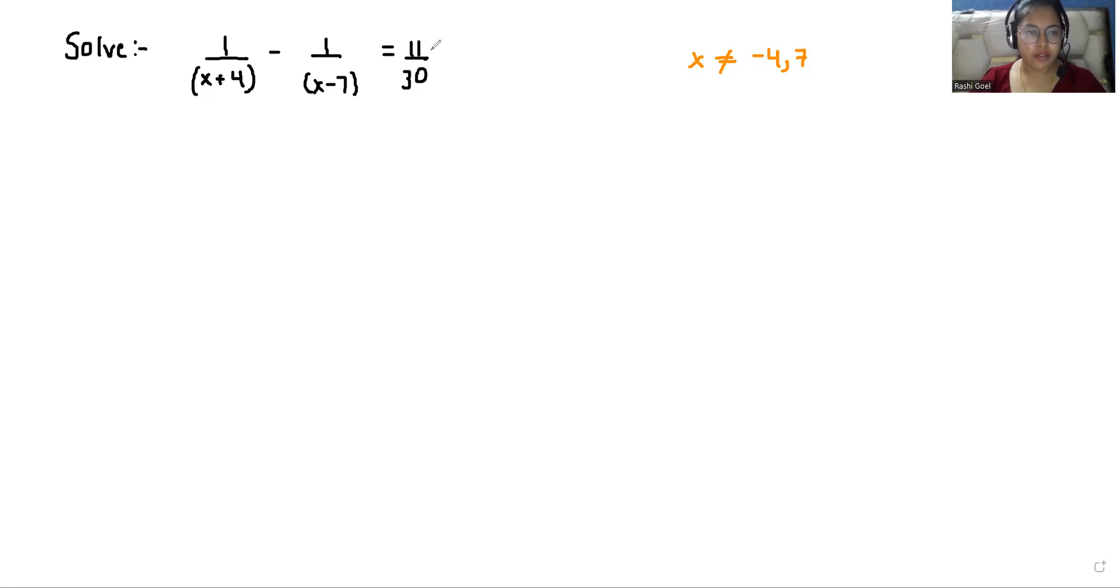We're solving 1 over (x+4) minus 1 over (x-7) equals 11 by 30. The value of x can never be equals to -4 or 7 because if the value is equal, our denominator becomes 0 and it can't be possible. So let's start with today's video solution.